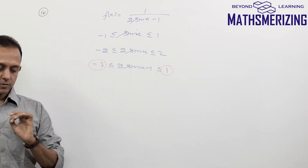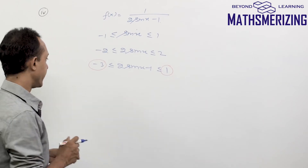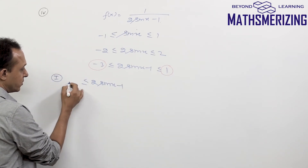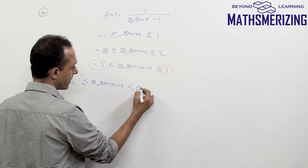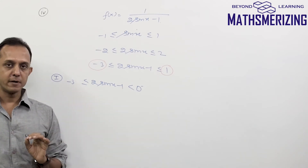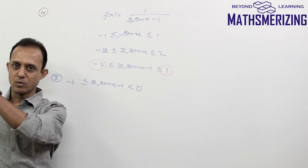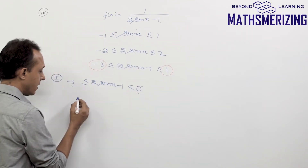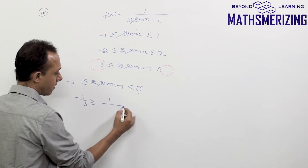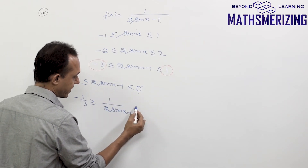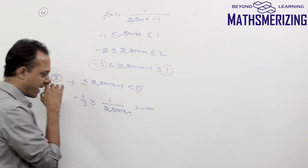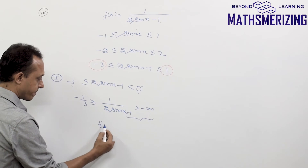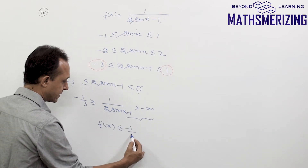When we have a negative number on one side and a positive number on the other, we solve by taking two separate cases. Case 1: when 2sin(x) - 1 is negative, so it is greater than or equal to -3 but less than 0⁻ (a very small negative number approaching 0). Since both numbers are now negative, I can take the reciprocal: -1/3 ≥ 1/(2sin(x) - 1) > 1/0⁻ = -∞. So f(x) ≤ -1/3.